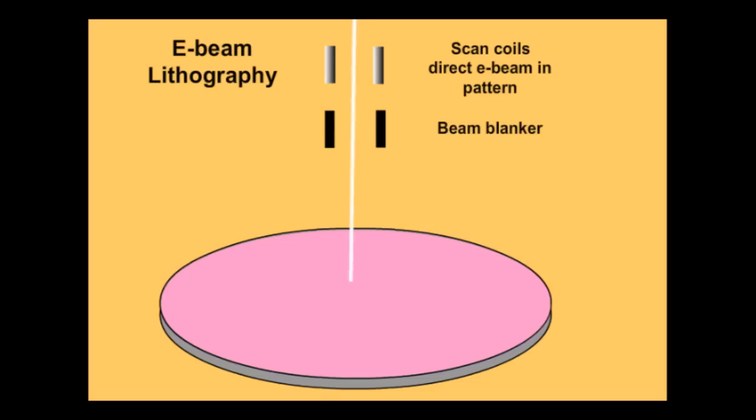In order to create pattern elements with nanoscale dimensions, we need the resolution of an electron beam. In e-beam lithography, we use the electron beam of an SEM to copy our pattern onto a wafer coated with resist. It's a serial process, like tracing a picture out of a book, and so it takes much longer than a parallel process like photolithography.